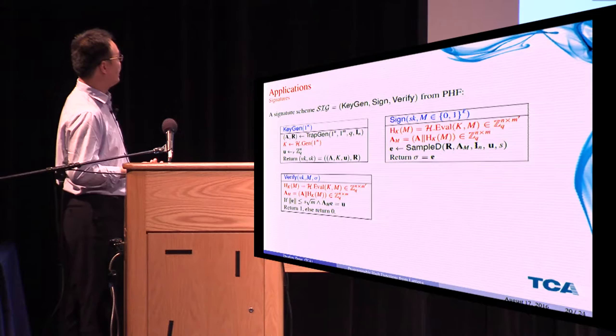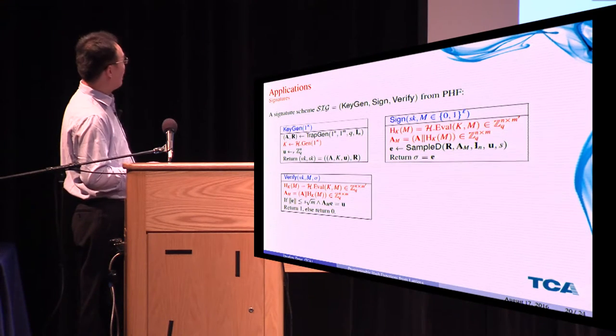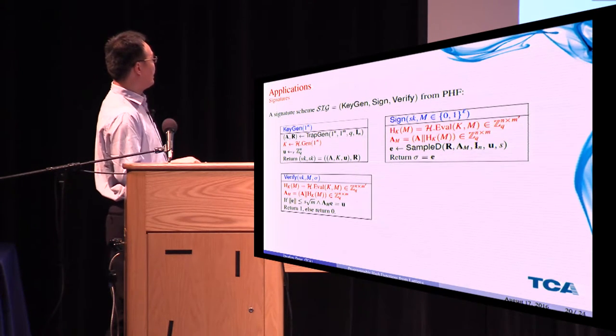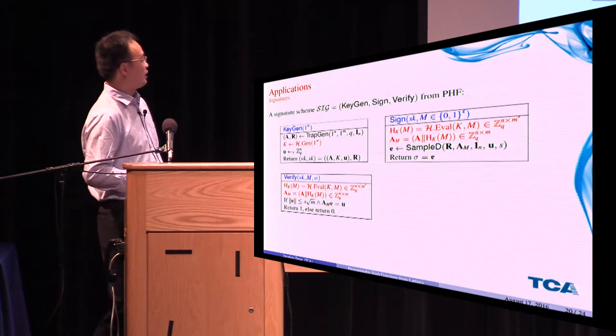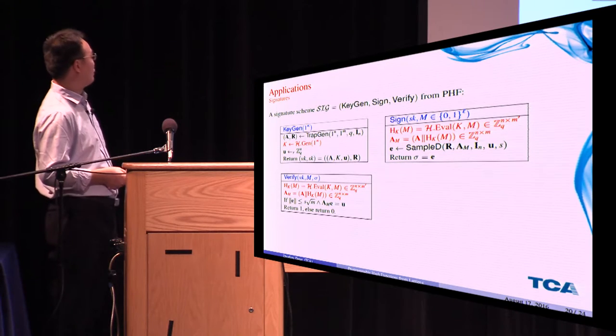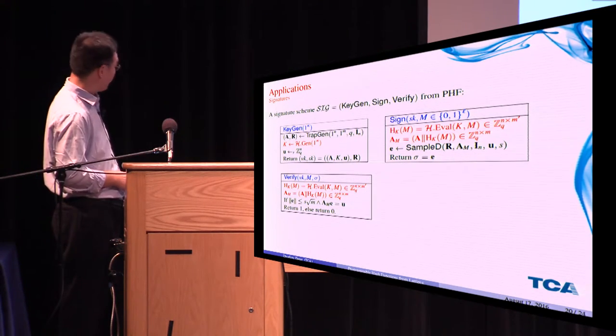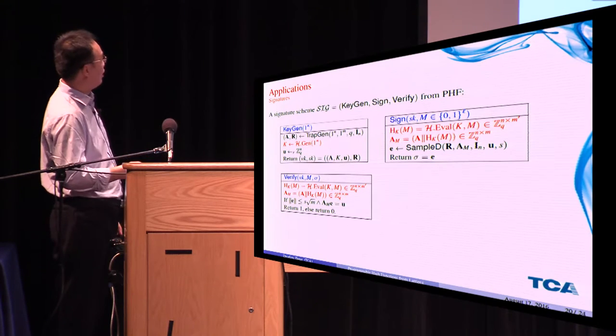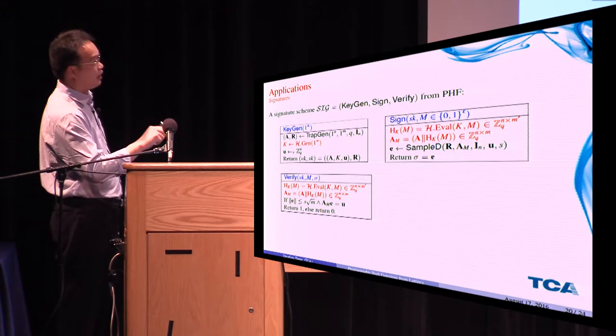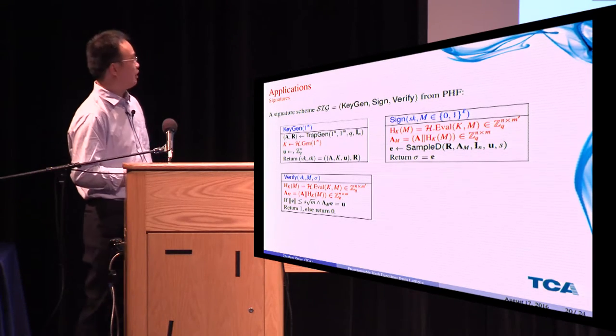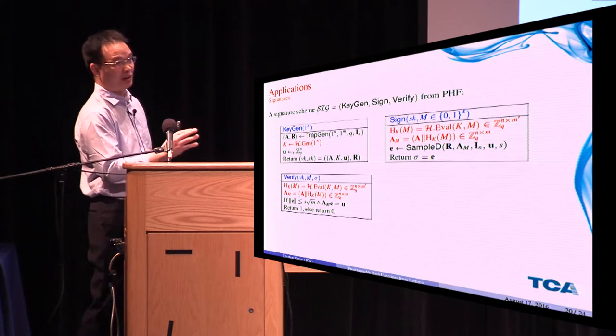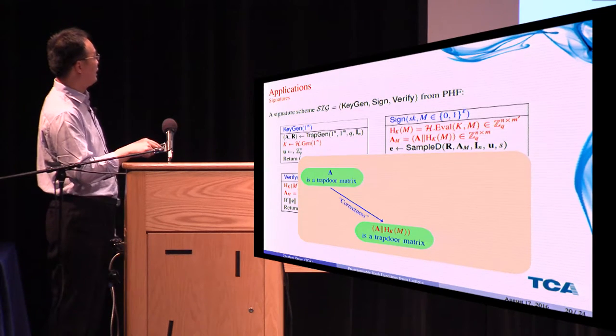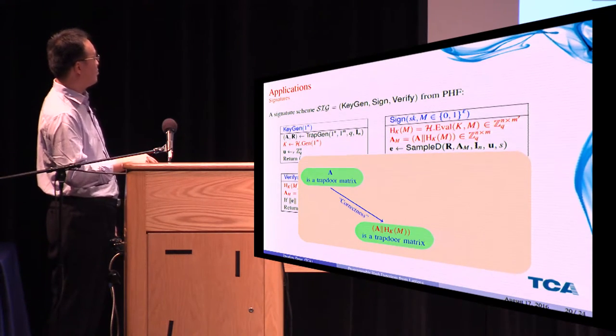To verify a signature, we also run the HEval algorithm and get h_K(M), and then we form A_M. And then we check whether the norm of E satisfies this condition and A_M times E equals U. This is the verification algorithm. We see that the signature is a single vector, and the verification key, if we apply the Type 2 PHF of our previous construction, then the verification key is actually O(log N). The correctness follows from the fact that if A is a trapdoor matrix, so is A_M.